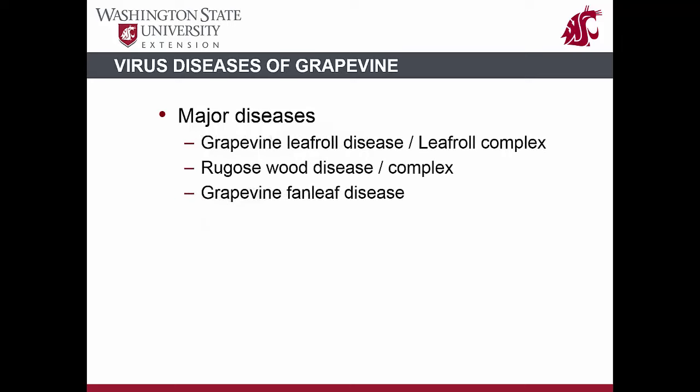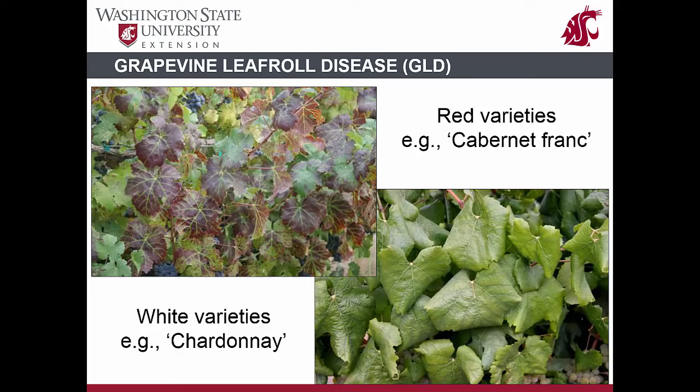The three most important virus diseases affecting grapevines are grapevine leaf roll disease, rugose wood complex, and grapevine fan leaf degeneration. These diseases are present in almost all grapevine-growing regions in the world and cause significant losses to grape production.